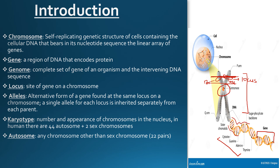Now, what is a karyotype? A karyotype is the number and appearance of chromosomes in the nucleus. In humans, there are 22 pairs of autosomes and one pair of sex chromosomes. This pair decides whether the baby will be a girl or a boy. Autosomes are any chromosomes other than the sex chromosomes.